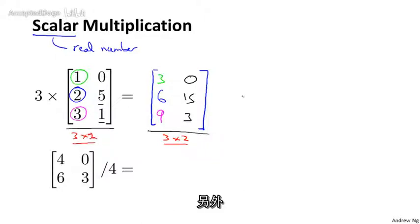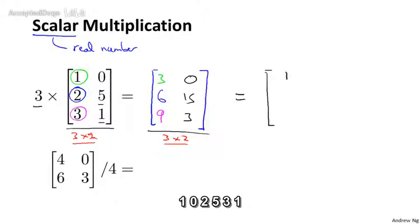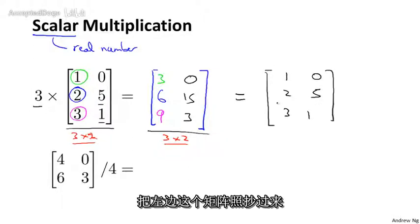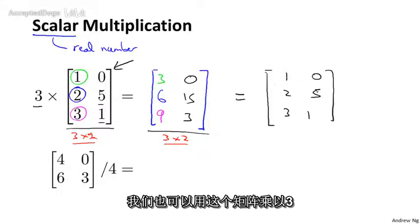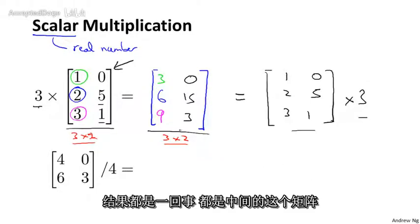And by the way, you can write multiplication either way. So I had 3 times this matrix. I could also have written this matrix 1, 0, 2, 5, 3, 1, times 3. Whether it's 3 times the matrix or the matrix times 3 is the same thing. And this thing here in the middle is the result.